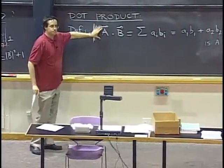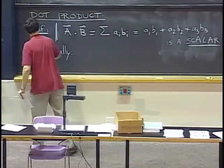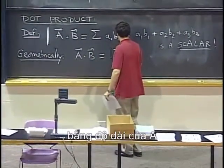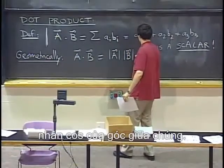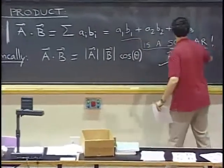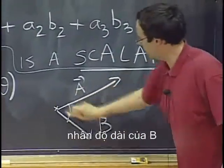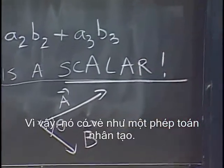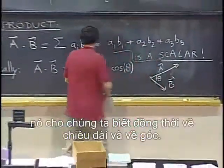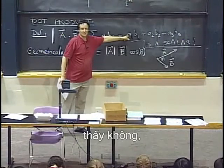To see what it is good for, I should first tell you what it does geometrically. What you do when you multiply two vectors in this way — the answer is equal to the length of a times the length of b times the cosine of the angle between them. That looks like a very artificial operation, but the basic answer is it tells us at the same time about lengths and about angles. And the extra bonus is that it is very easy to compute using the component formula.